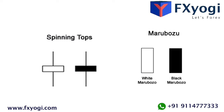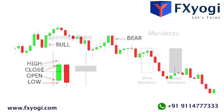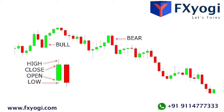Japanese candlesticks with a long upper shadow, long lower shadow, and small real bodies are called spinning tops. The color of the real body is not very important. The spinning top pattern indicates indecision between buyers and sellers. If a spinning top forms during an uptrend, this usually means there aren't many buyers left and a possible reversal in direction could occur. If a spinning top forms during a downtrend, this usually means there aren't many sellers left and a possible reversal could occur.